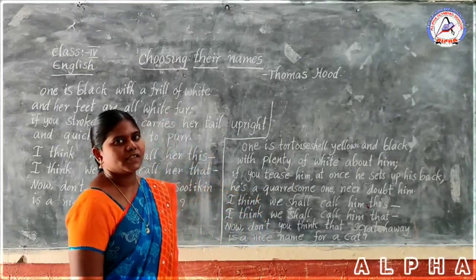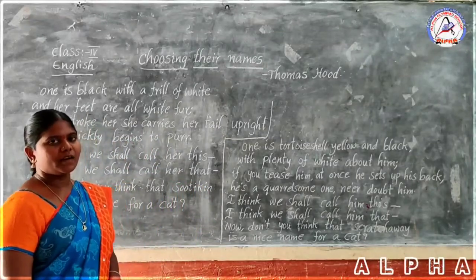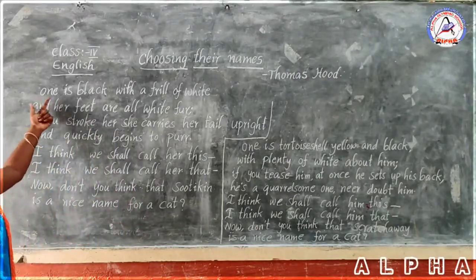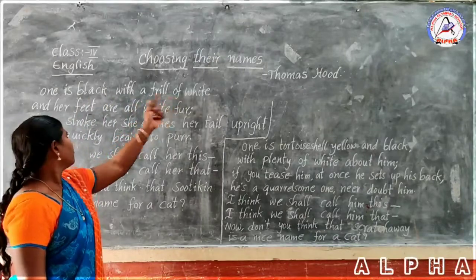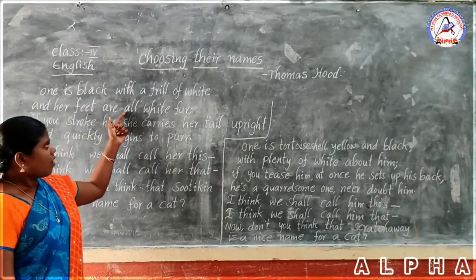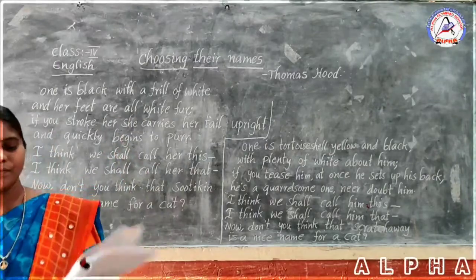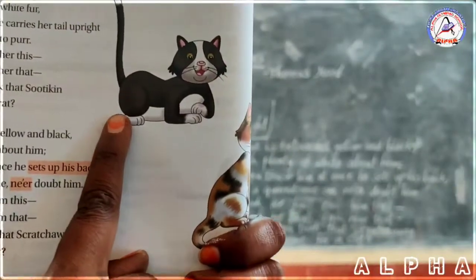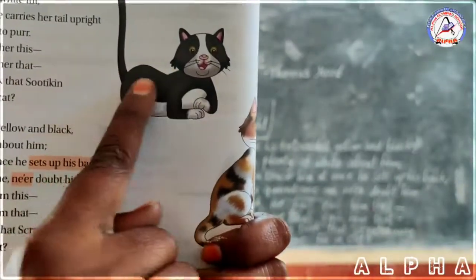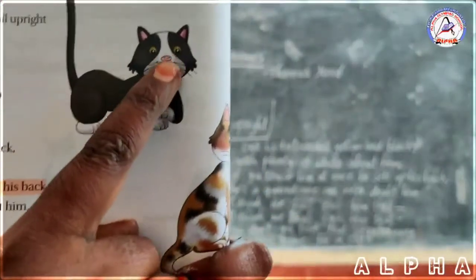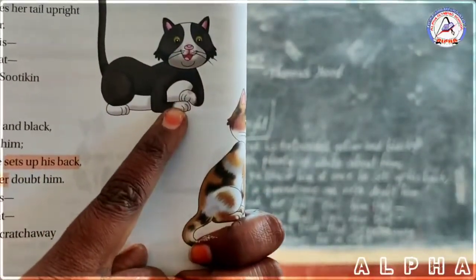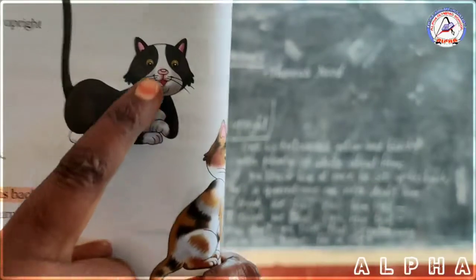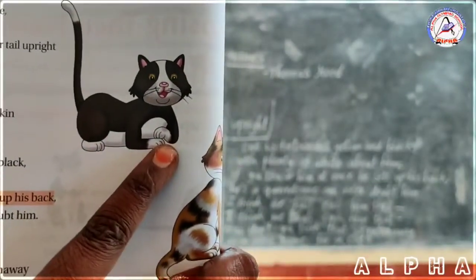Okay children, in the first stanza, the poet compares the cat's temper to pepper. This is the second stanza. 'Bunny is black with a frill of white, and her frill are all white fur.' Look at this picture — this is the second cat. This cat is full of black with a frill of white. Frill means a border. White border around her feet and neck only.